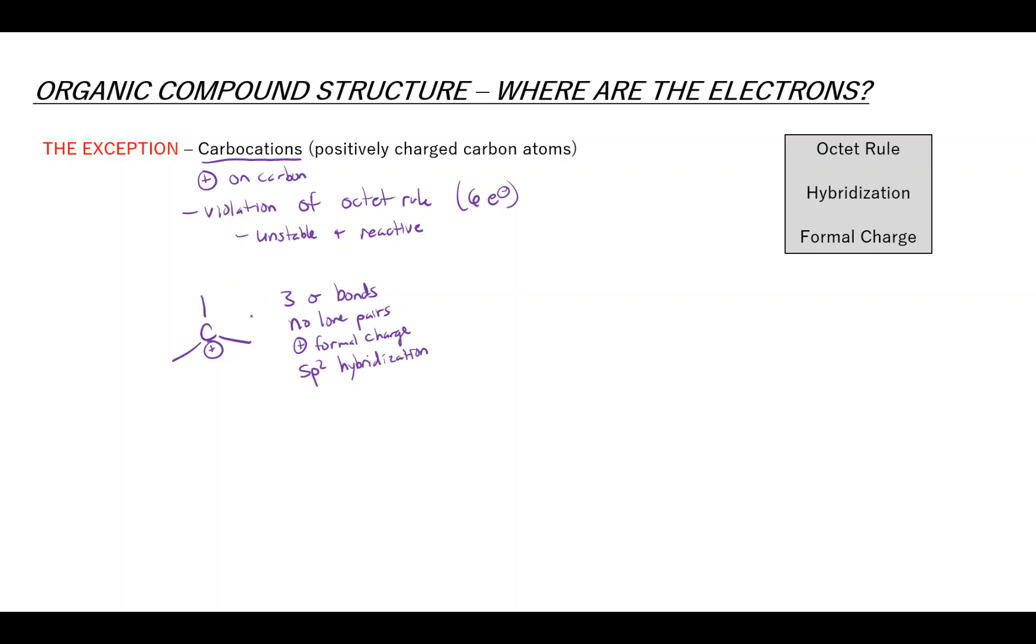Because it has only three sigma bonds, the positive charge actually represents an empty orbital, positive p orbital, and so that orbital is not hybridized, and so that's why it's only sp2 and not sp3.